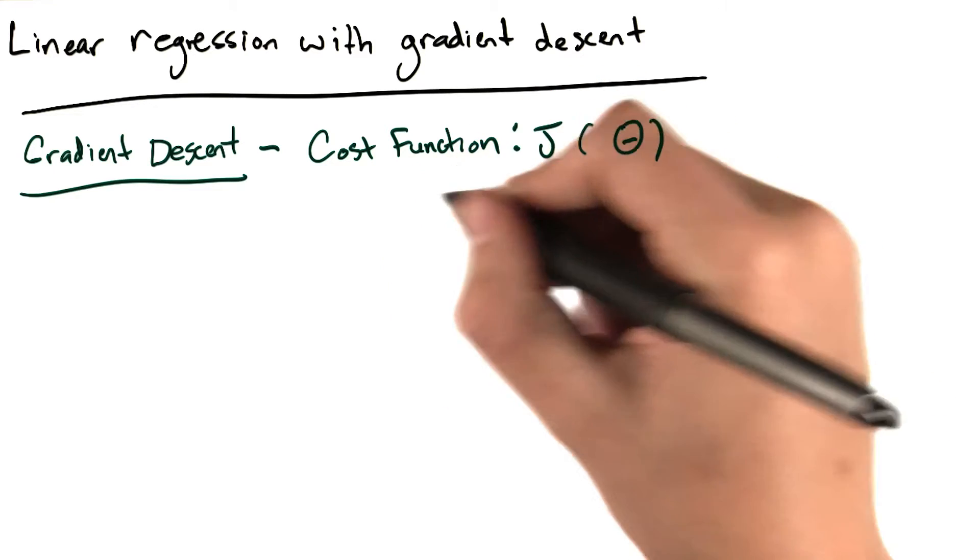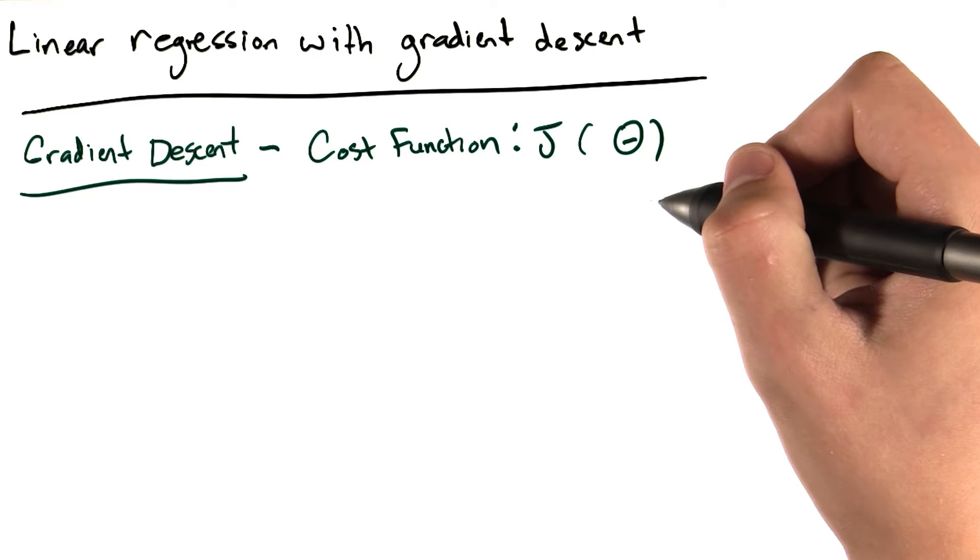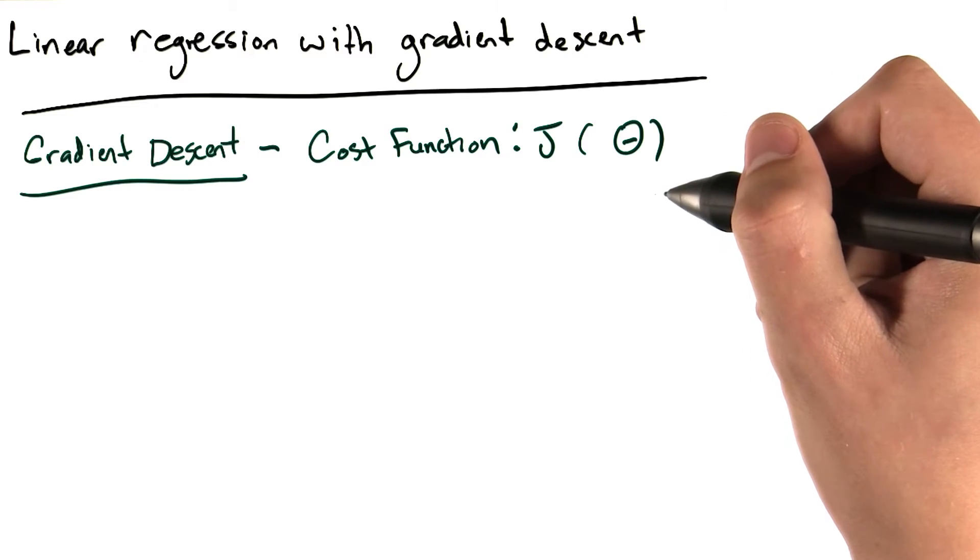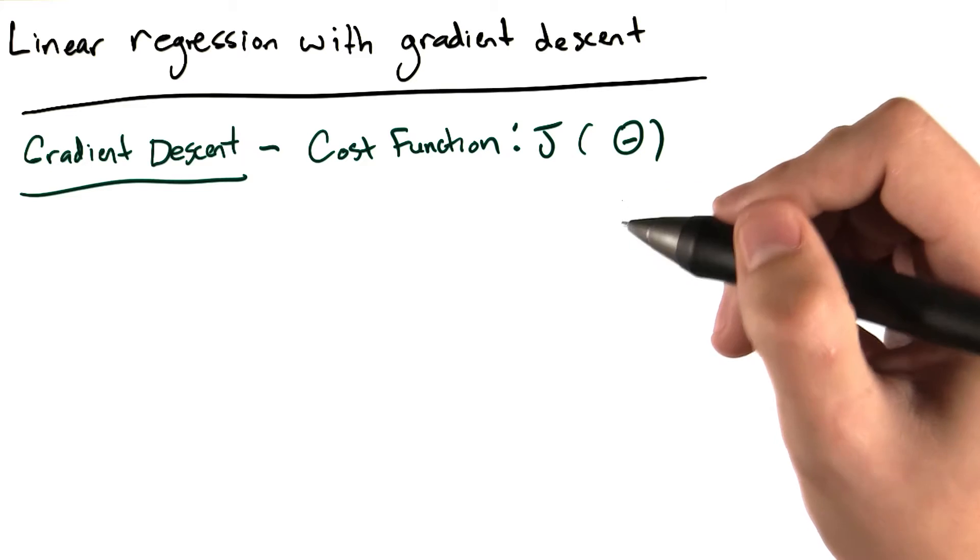First, we need to define some cost function, which we'll call J of big theta. I'm going to use big theta here to represent our entire set of thetas, and I'll use this notation throughout the rest of this lesson.